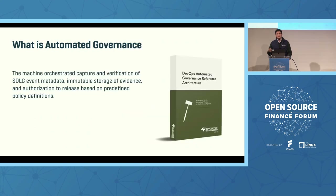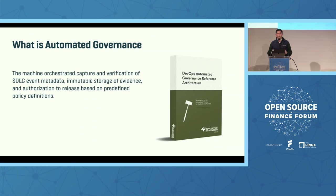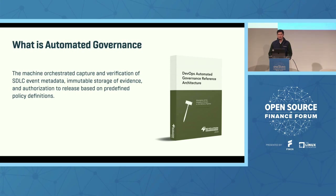So what is automated governance? The definition we'll be working from is that automated governance is the machine-orchestrated capture and verification of SDLC event metadata, immutable storage of evidence, and automation of the authorization of the release based on predefined policy definitions.